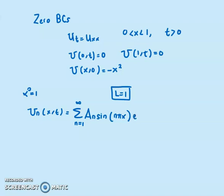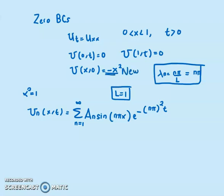Here α² = 1 and λ_n = nπ/L. Since L = 1, λ_n = nπ. When t = 0, e to the power 0 is 1, so we have Σ(n=1 to ∞) a_n · sin(nπx) = −x².